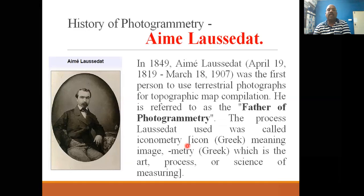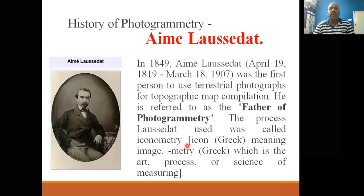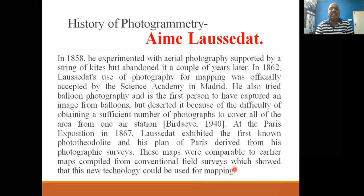Aimé Laussedat is a well-known person in photogrammetry. In 1849, he was the first person to use terrestrial photogrammetry — meaning the camera was located on the ground — for producing topographic maps, which show natural and artificial features combined. He is referred to as the father of photogrammetry. The process he used was called iconometry, meaning to measure objects in images. In 1858, he experimented with aerial photography supported by a string of kites.